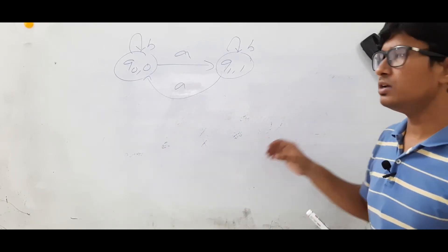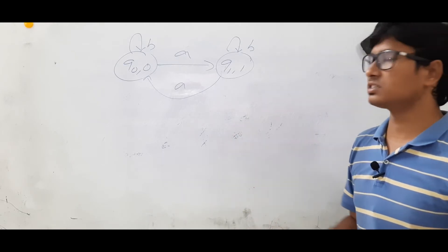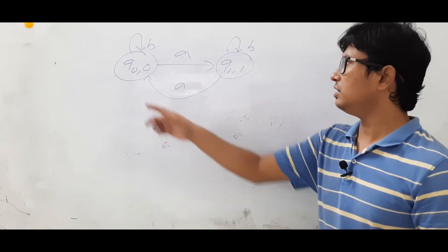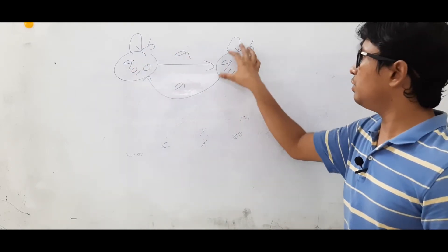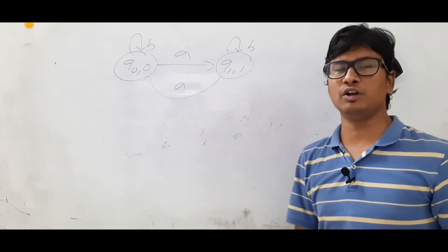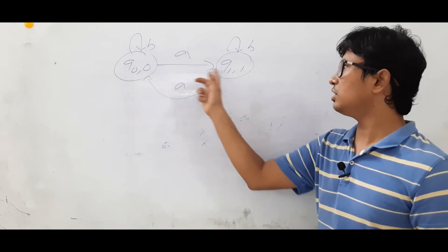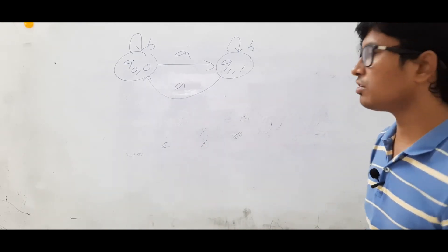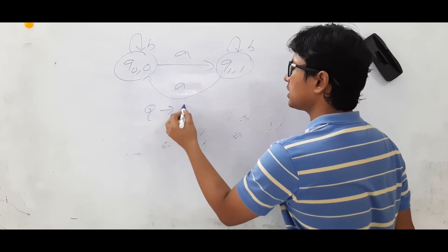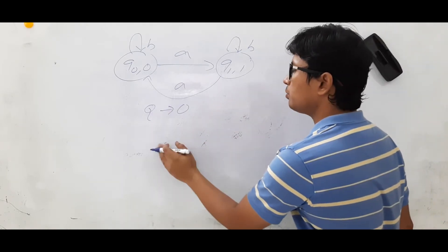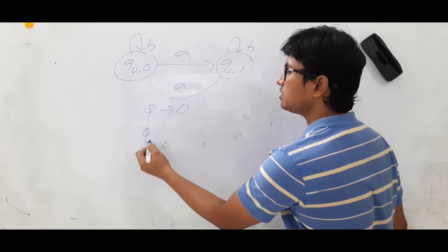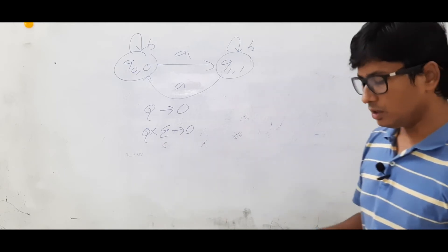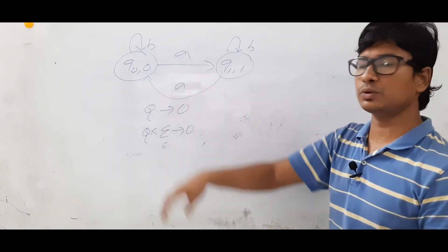Now we will discuss a procedure for converting the Moore machine to a Mealy machine with an example. This is a very simple one, so I will not take more time. Can I say this is a Moore machine? Yes, I can say. Why? From Q0 on A and B you have transitions. Q1 on A and B you have transitions. So it is following the deterministic nature, and for each state you have an output. So I can say that it is a Moore machine. The output function of a Moore machine is: from a state Q you will get an output. But the output function of a Mealy machine is: from Q on an alphabet you will get an output. So you have to convert this Moore machine to a Mealy machine.